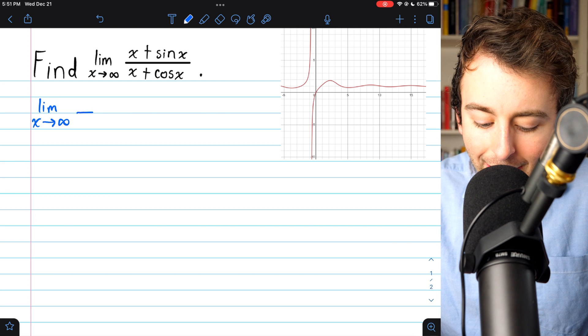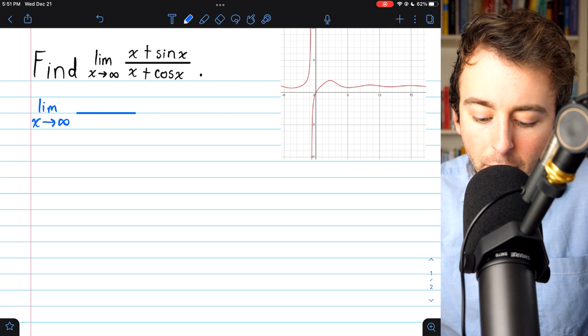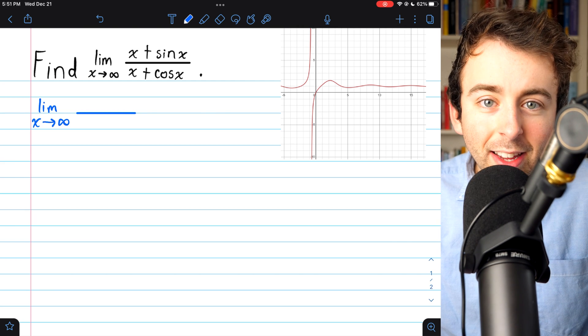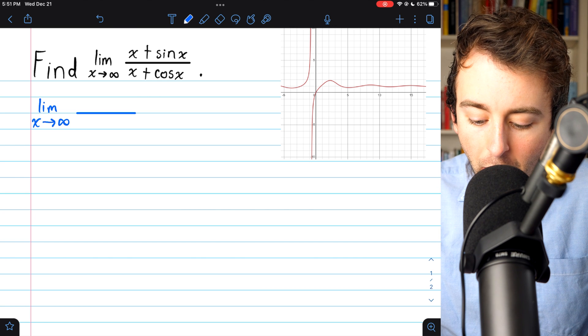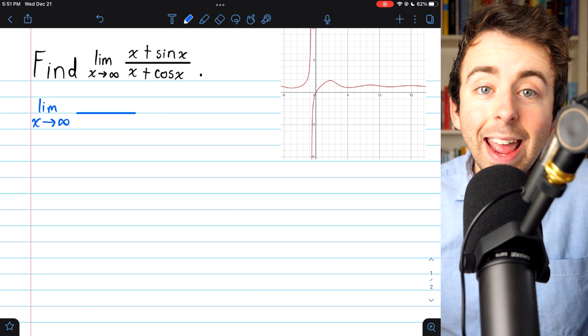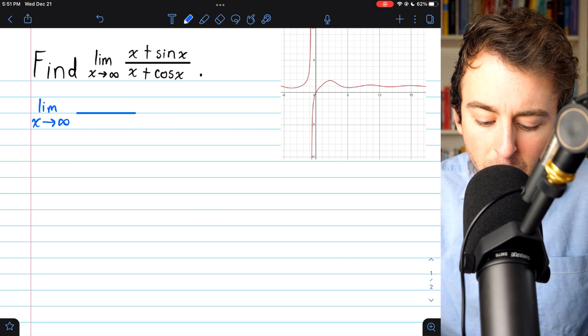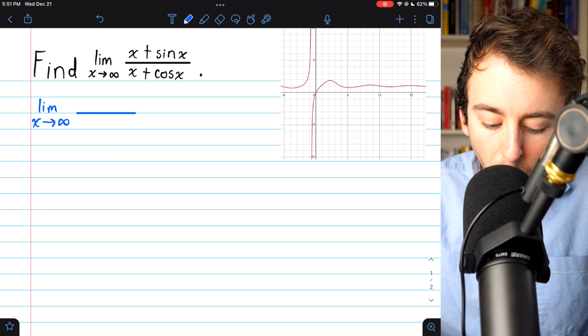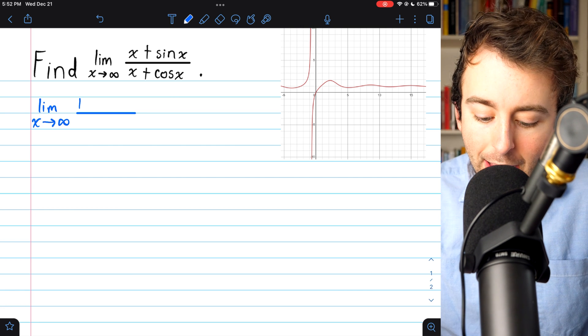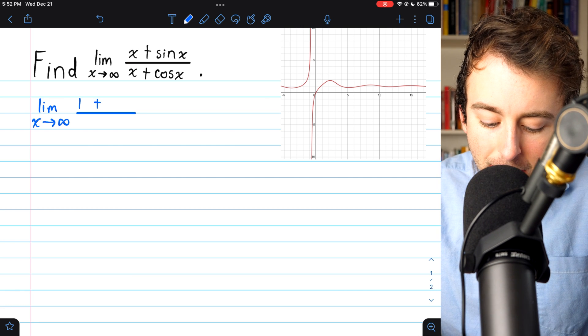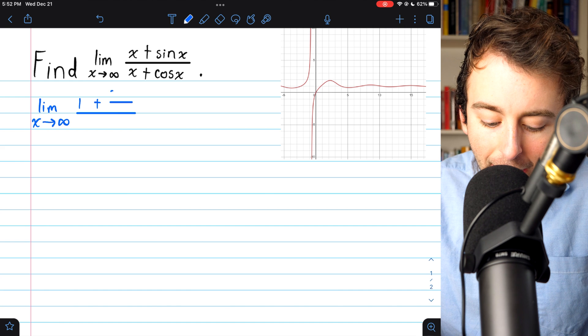So, what we're doing is multiplying the top and the bottom by 1 over x. It's like we're dividing the top and the bottom by x. When we do that, x becomes 1, because we're dividing by x, and sine x becomes sine x over x.